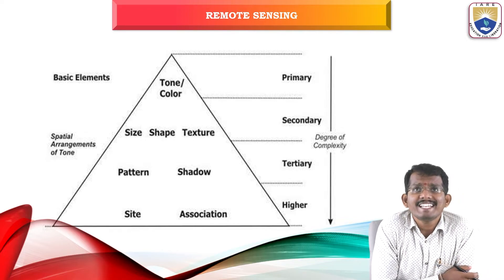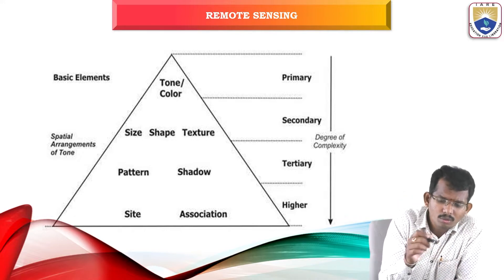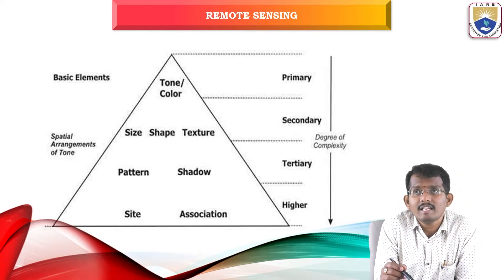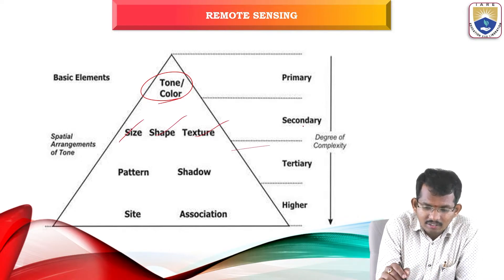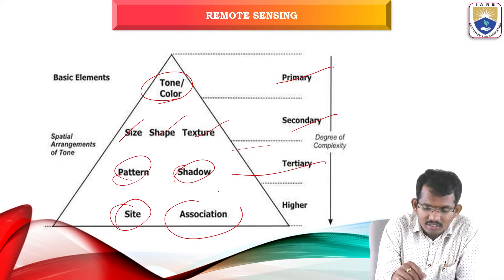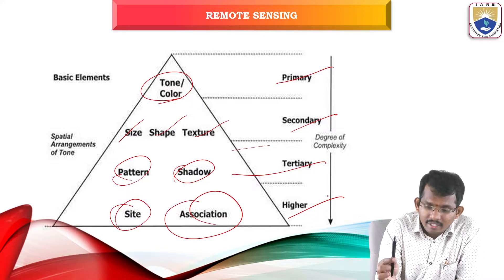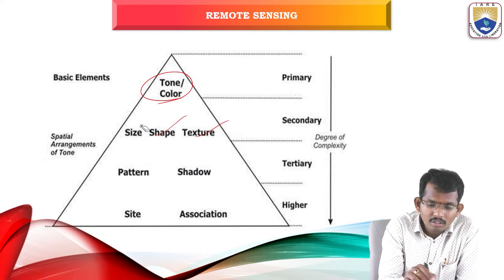There are some basic elements in an image — spatial arrangement of tone. Tone or color is the primary level; size and shape are at the secondary level; texture is at the secondary level; pattern, shadow are at the tertiary level; and site and association are at the higher level. So there are different primary, secondary, tertiary, and higher levels in the visual image interpretation technique.